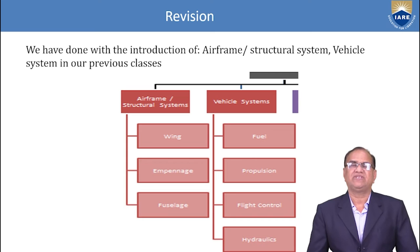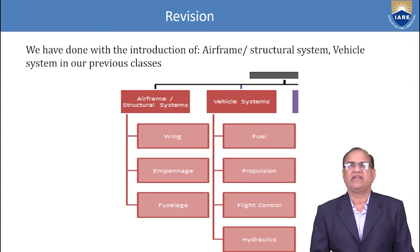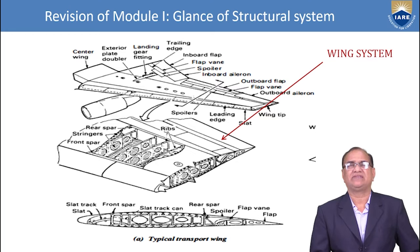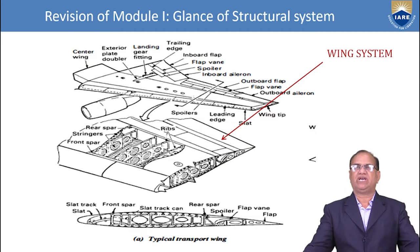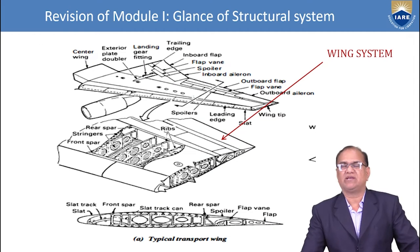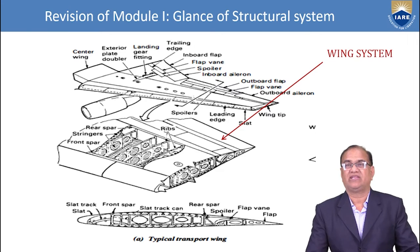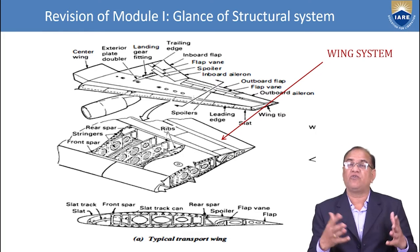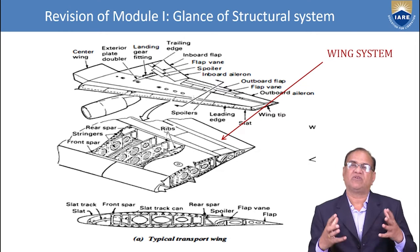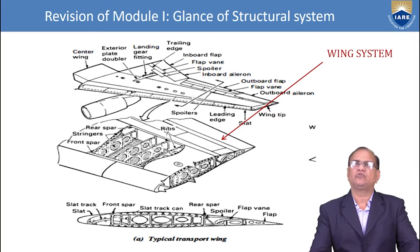We have done the introduction of airframe structural vehicle systems in our previous classes. In the airframe structure we have seen the structural system in the wing, empennage, and the fuselage. The wing is the main component of the aircraft used for the production of lift. The primary purpose of the wing is to produce lift, but we also use it secondarily as fuel storage — 80 percent of the fuel is stored inside the wing.